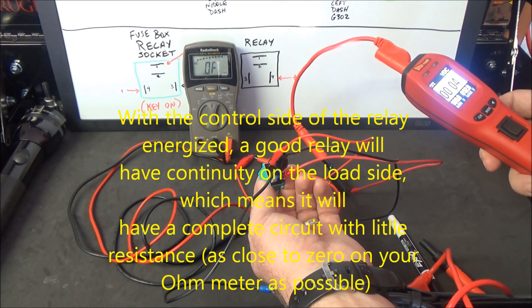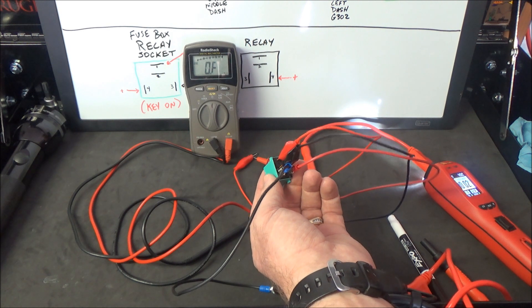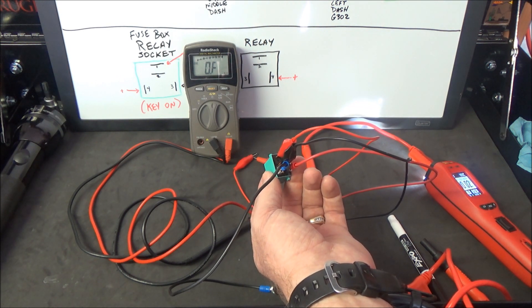If I turn it off, it goes back open. So this relay is working correctly, and that's how easy it is to check your relay. You just need to supply power and ground to it and make sure it's working.